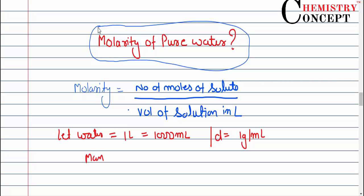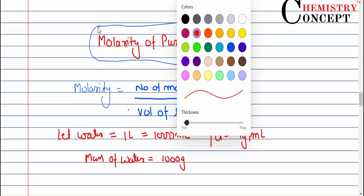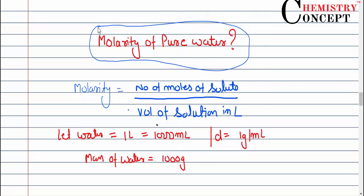If we have 1000 ml of water, its mass will be 1000 grams. But to find molarity, we don't need mass - we need number of moles. Number of moles will be the given mass of water divided by the molar mass of water.